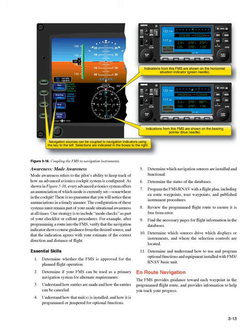One strategy is to include mode checks as part of your checklist or call-out procedures. For example, after programming a route into the FMS, verify that the navigation indicator shows course guidance from the desired source, and that the indication agrees with your estimate of the correct direction and distance of flight.